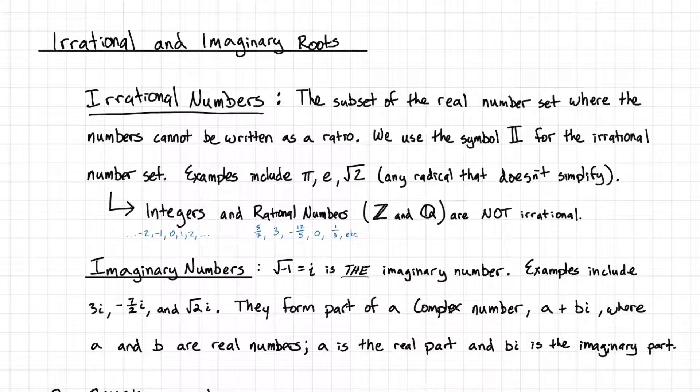And examples, some popular examples are pi, e, we'll talk about e in a few lectures, and then square root of 2, and actually for that matter, any radical that doesn't simplify, like cube root of 7, that doesn't simplify, that's irrational.